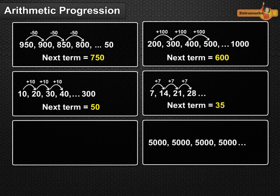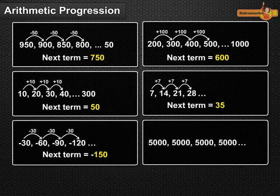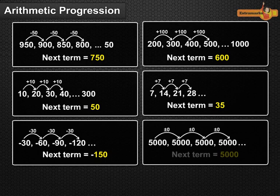In fifth, each term is obtained by subtracting 30 or adding minus 30 to the term preceding it. Therefore, next term in continuation is minus 150. In sixth, all the terms in the list are 5000. That is, each term is obtained by adding or subtracting 0 to the term preceding it. Therefore, next term in continuation is 5000.